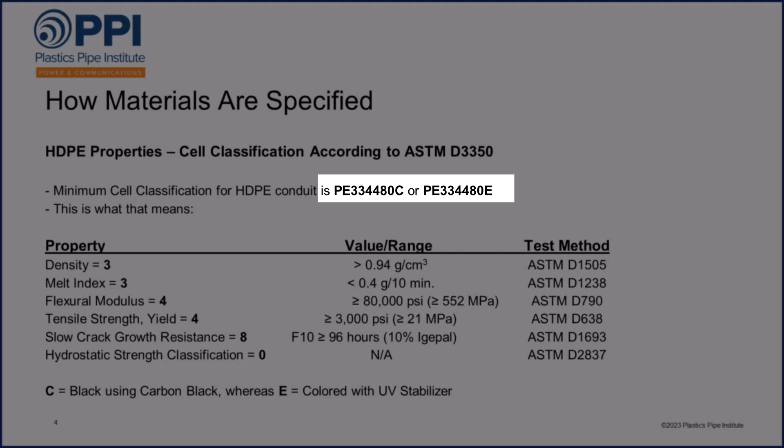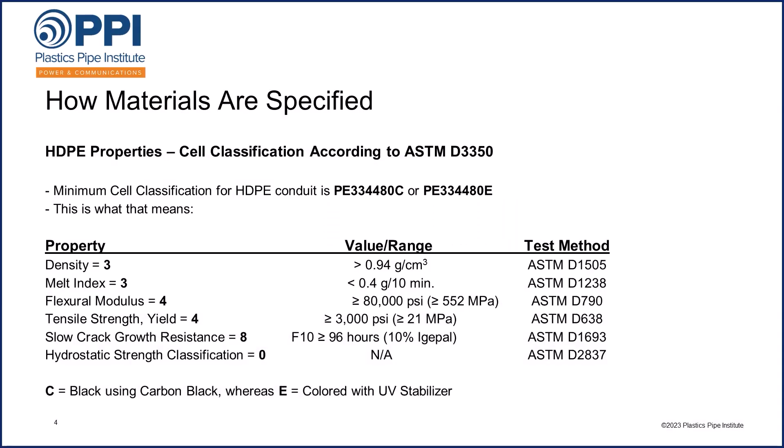If you've looked at the HDPE Conduit standards or you have seen a Conduit manufacturer's specification, you may have seen the minimum cell class for HDPE Conduit is specified as PE334480C or PE334480E, and you may wonder what those numbers mean. Those numbers are part of the cell classification as defined in ASTM D3350, as shown below.